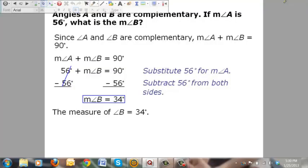And, if you wanted to get all crazy putting words in with your answers, you could say the measure of angle B equal to 34 degrees. But, I think you're pretty safe if you just write this right here.